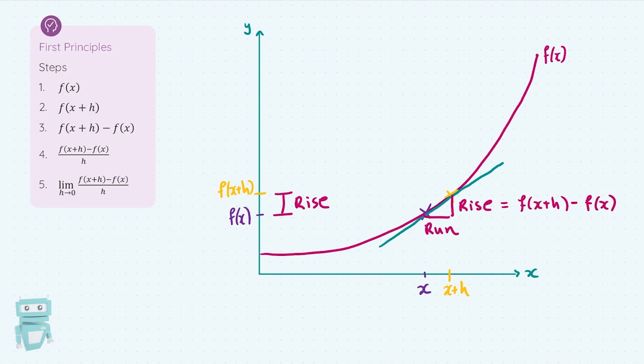And then step four asks us to take f(x + h) minus f(x) and divide it by h. We're going to note that the distance h is actually just the run. So that's why we divide f(x + h) minus f(x) by h, because technically that's just taken our rise over our run. And that's kind of getting our slope at this point.